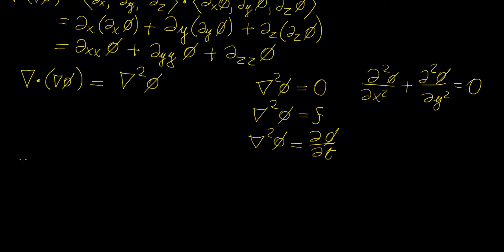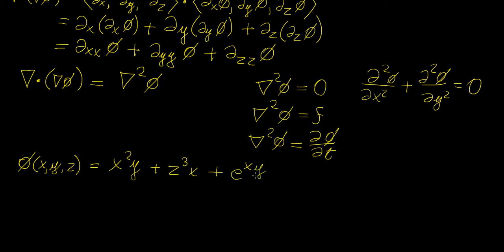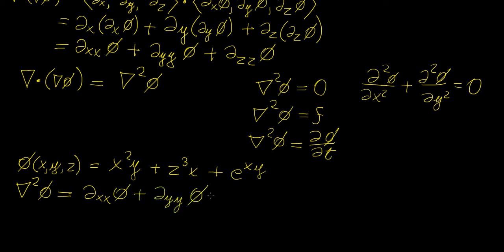Let's have a look at some things we can do with it. Let's say we have the scalar function phi equal to x squared times y plus z cubed times x plus e to the xy. To apply the Laplacian, we could take the gradient first and then the divergence, but we can also just apply the Laplacian operator directly. So we take the second partial with respect to x of the whole function, plus the second partial with respect to y of the whole function, plus the second partial with respect to z acting on the whole function.